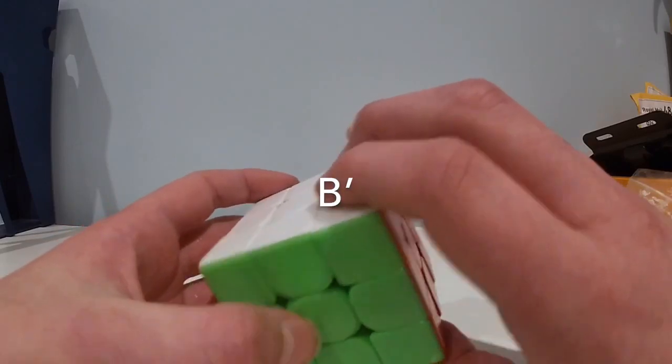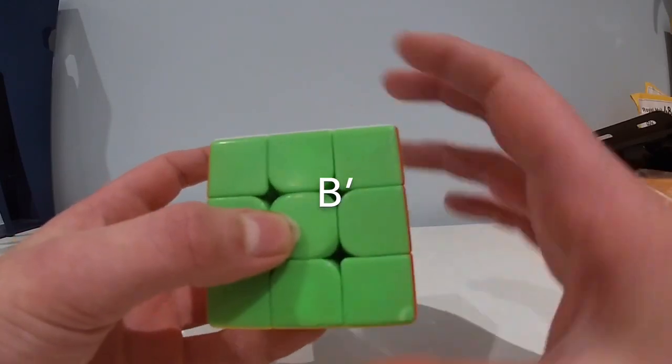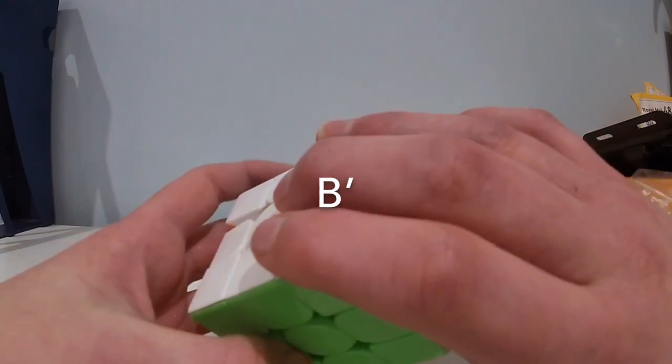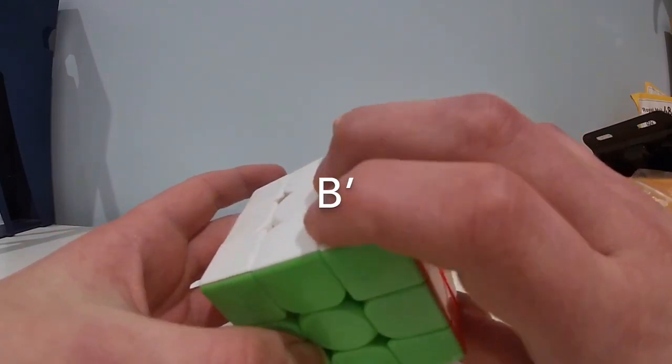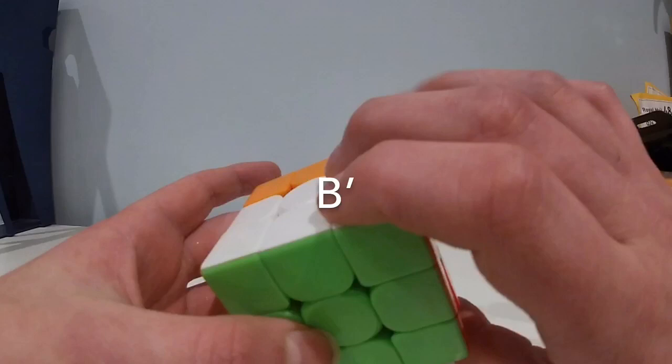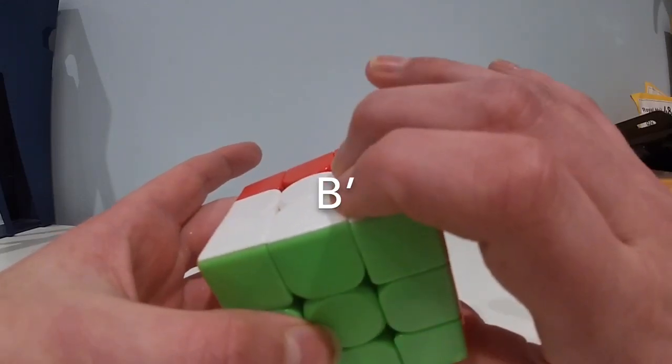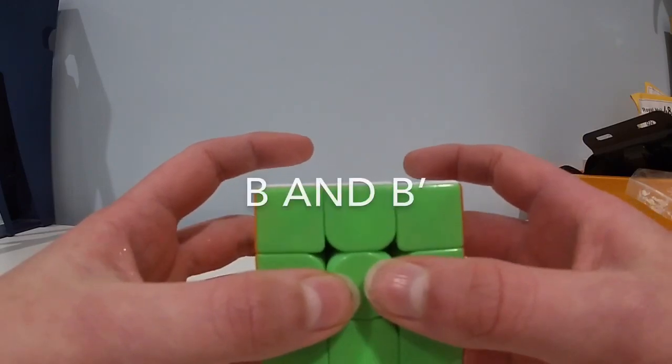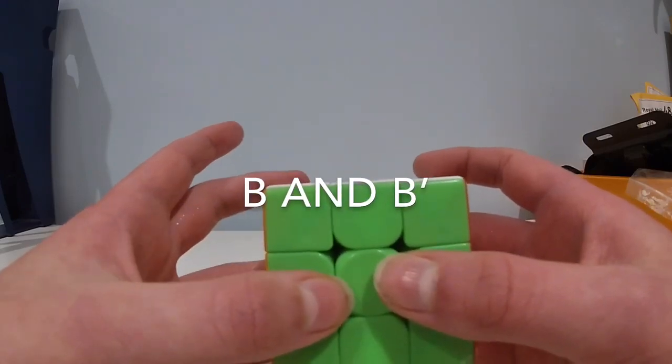B prime is easier, you again have to re-grip to this position but then it's simply a flick with your right ring finger. You can also mirror these if you prefer that.